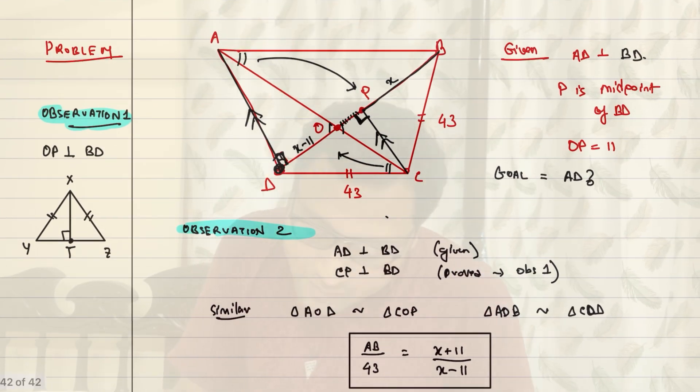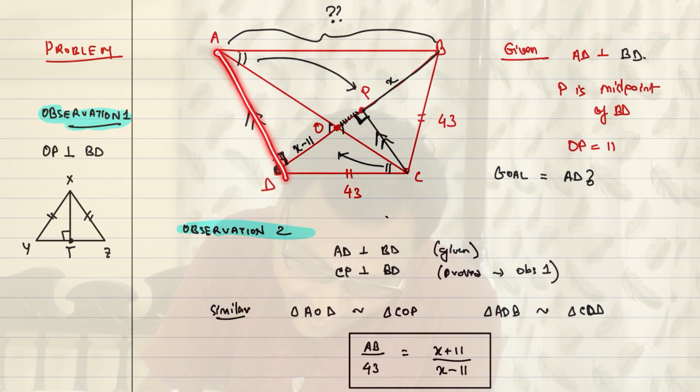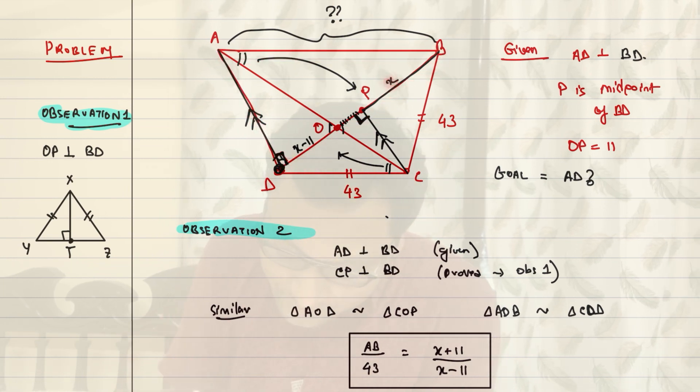And notice, if we know AB, then we are done. If we know AB, then we are done. Why is that? Because then this is a right angle triangle ADB. So, you can just use Pythagorean theorem. If you know BD and AB, then you are done. Then you can just use Pythagorean theorem to find AD. That's the goal to find AD.